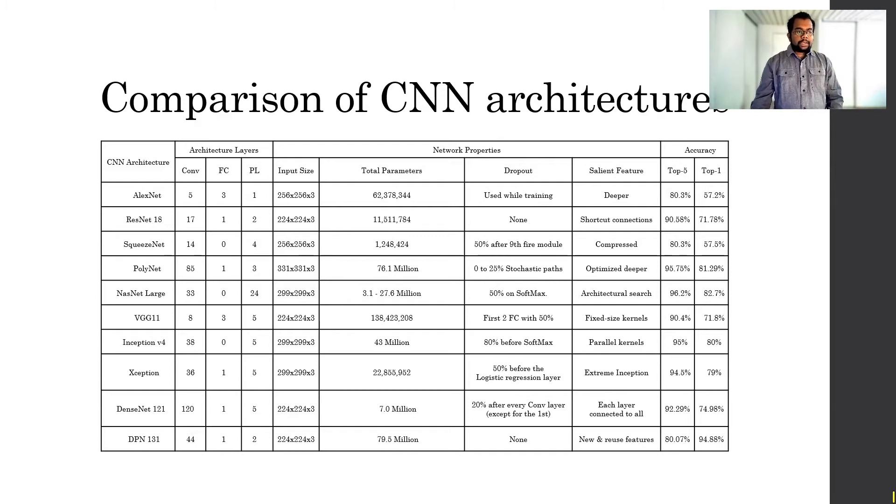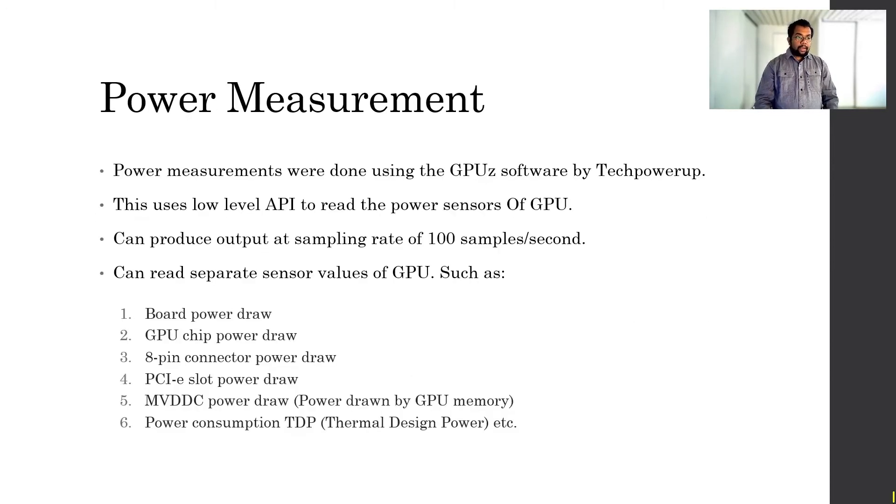Here's a comparison and overview of CNN architectures. You can see that we have ten commonly used CNN architectures here. They have different levels and different numbers of convolution layers, fully connected layers, and pooling layers. They even use different input sizes. There are different numbers of total parameters. They use a different number of dropout in different levels to optimize their architecture. And we have some salient features here, which are basically some special characteristics of those architectures. They have very different accuracy levels, like top five and top one accuracy. These accuracies are based on datasets provided by ImageNet and are equally evaluated.